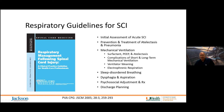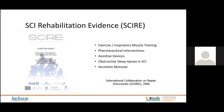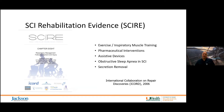Around the same time these guidelines came out in the United States, the SCIRE — the Spinal Cord Injury Rehabilitation Evidence guidelines — came out from the International Collaboration on Repair Discoveries. Chapter 8 of the SCIRE guidelines provided information on exercise and inspiratory muscle training, pharmaceutical interventions, assistive devices, obstructive sleep apnea, and secretion removal.